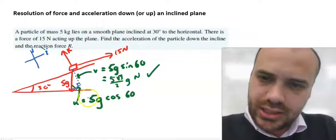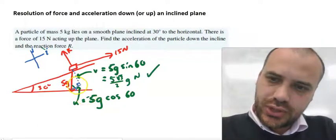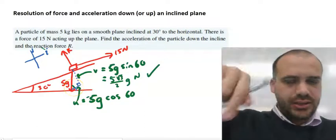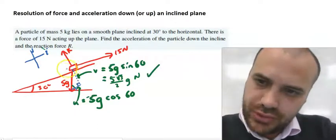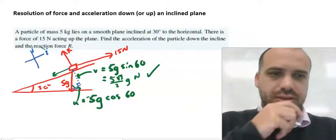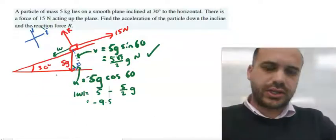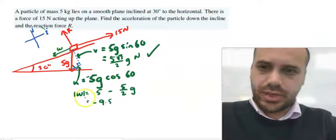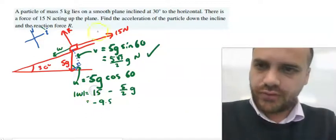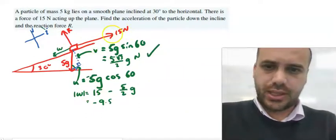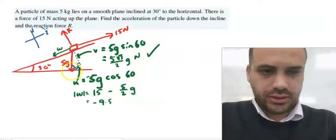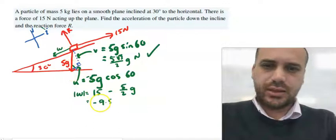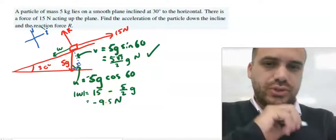If we add those two together, making sure to understand that this one's negative because it's working down the plane, then we'll get the resultant force acting on this vector, this resultant force right here. Let's figure out what that is. Alright, so I let the vector be w. w is going to be equal to 15 newtons up the hill minus 5 on 2g down the hill and we get negative 9.5 newtons out of that.